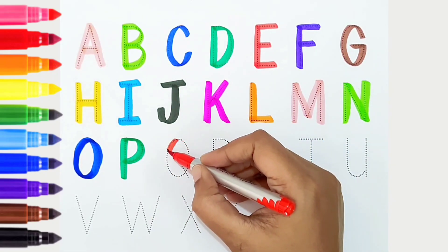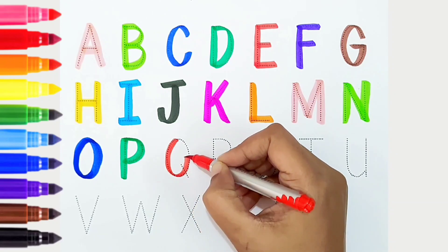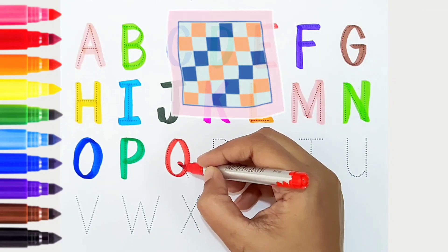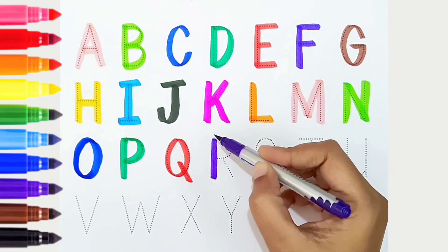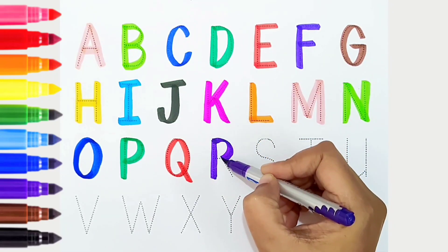Q, red color, Q is for quilt. R, violet color, R is for rabbit.